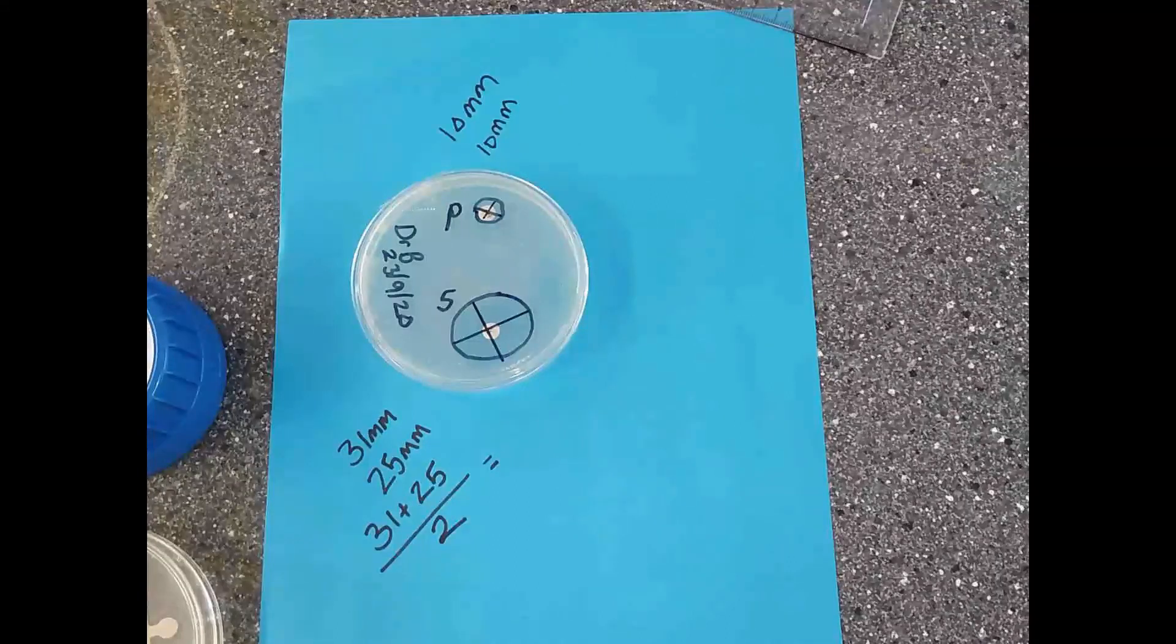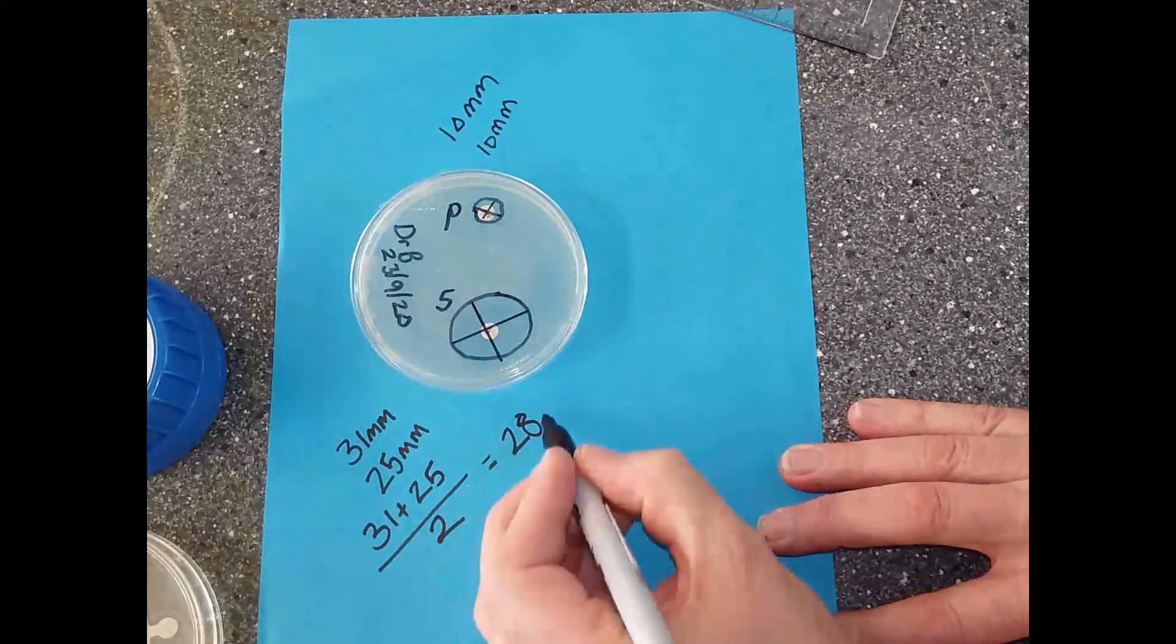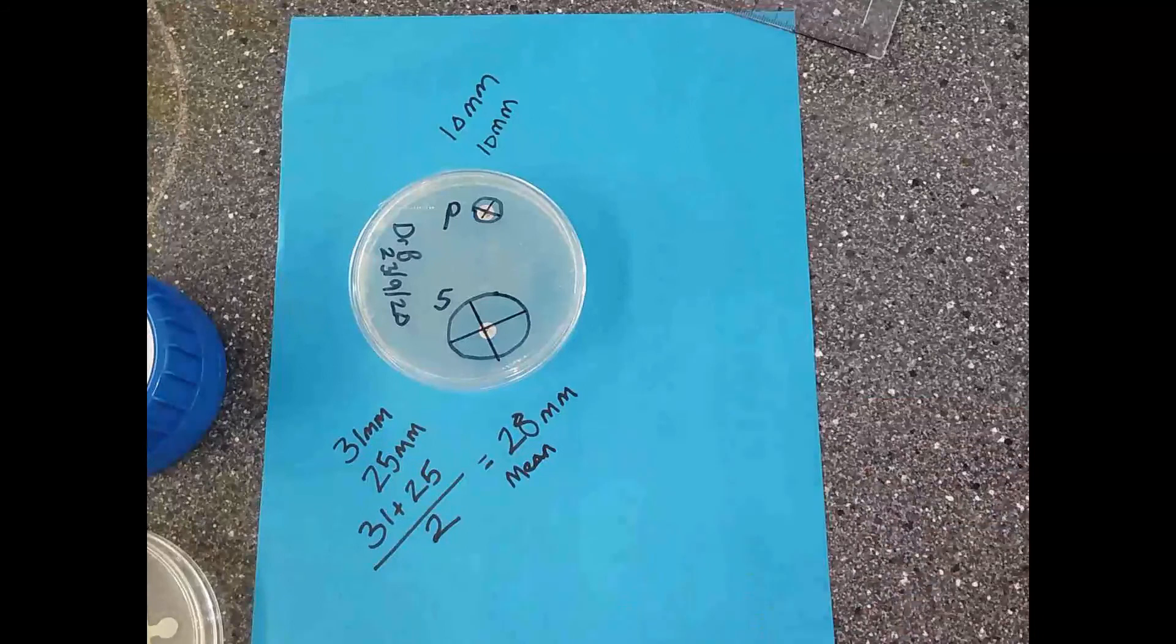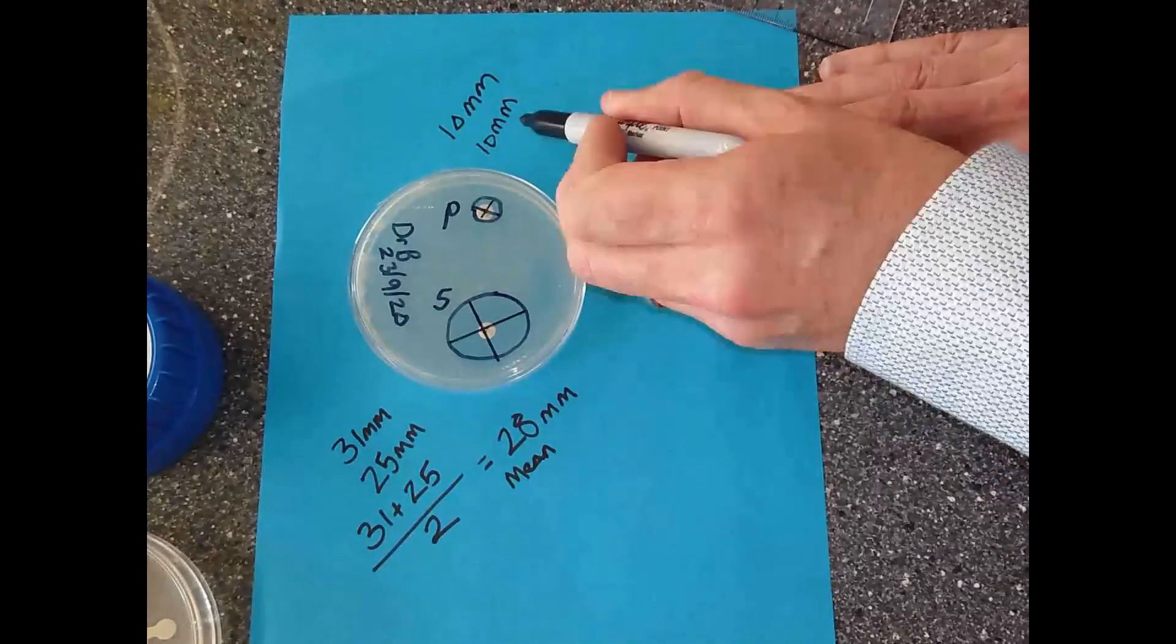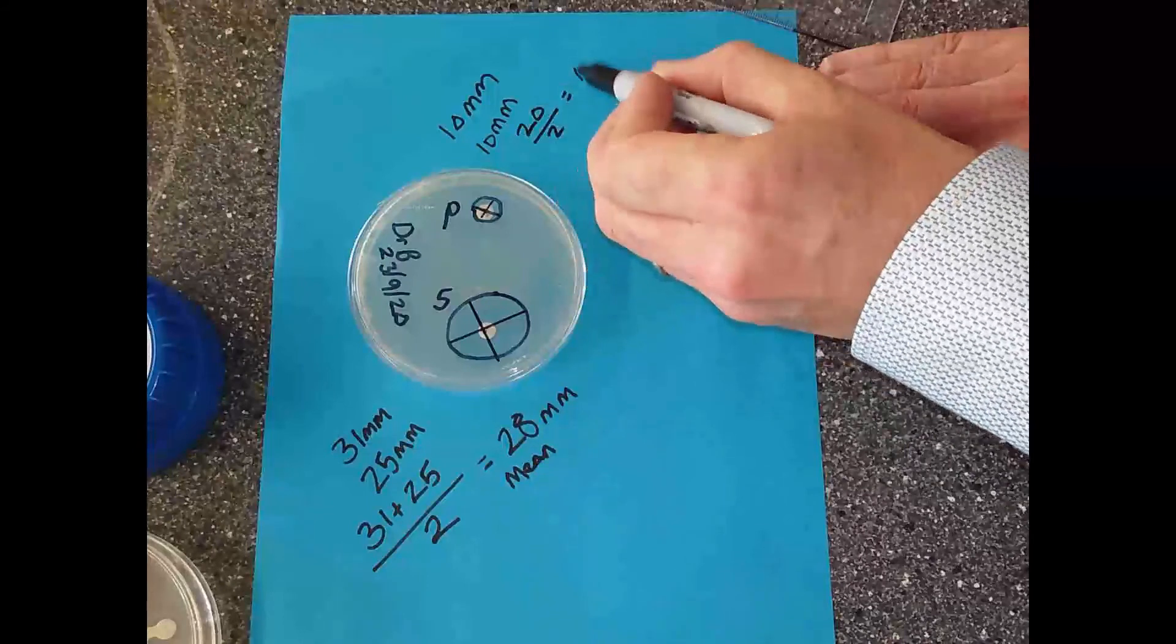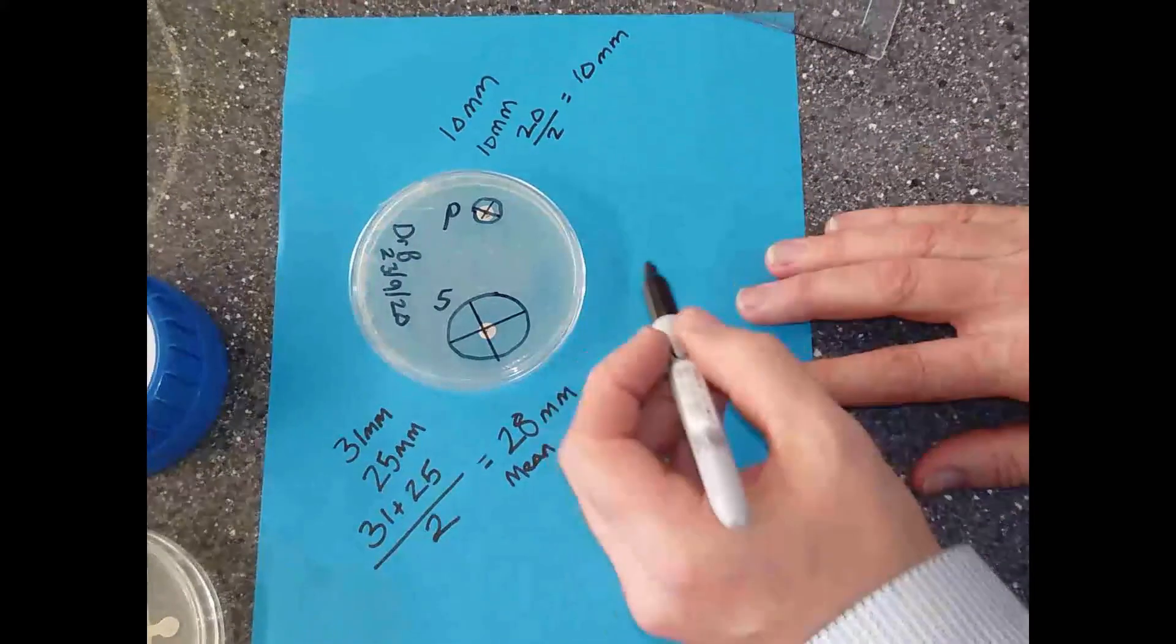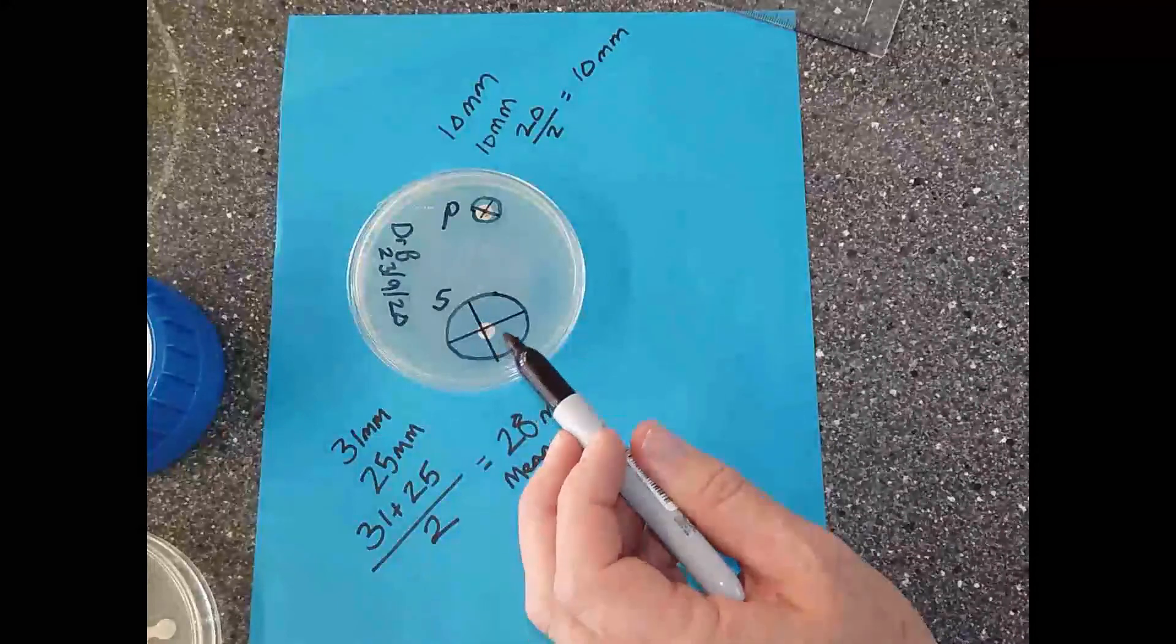To find the mean is 31 plus 25 divided by two. Very quick, excellent - so 28 millimeters. That's the average or mean diameter. And this one, 10 plus 10 - well that's easy. So that's 20 divided by two, which equals 10 millimeters. We now have two distances.